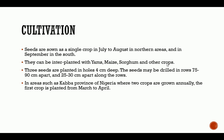For cultivation, seeds are sown as a single crop in July to August in northern areas and in September in the south. They can be interplanted with yams, maize, sorghum, and other crops. In intercropping, cowpea is used as a source of natural soil enrichment through its nitrogen-fixation capability. Three seeds are planted in holes 4 cm deep, and the seeds may be drilled in rows 75 to 60 cm apart, or 25 to 30 cm apart along the rows, depending on whether it is sole cropping or intercropping.